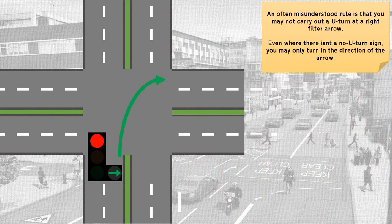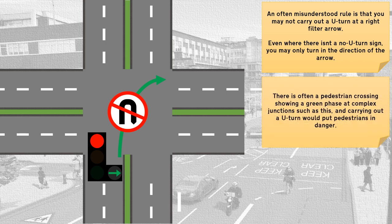An often misunderstood rule is that you may not carry out a U-turn at a right filter arrow, even where there isn't a no U-turn sign. You may turn only in the direction of the arrow. There is often a pedestrian crossing showing a green phase at complex junctions such as this, and carrying out a U-turn would put pedestrians in danger.